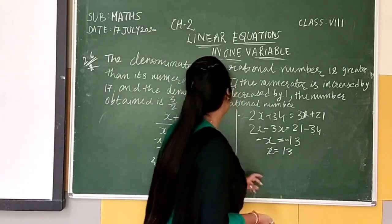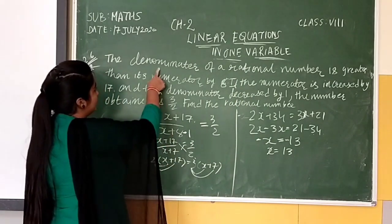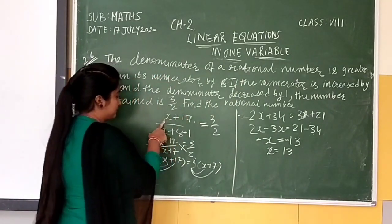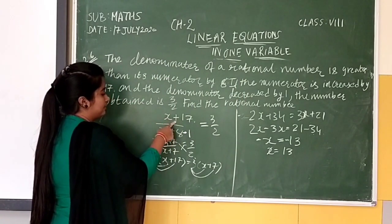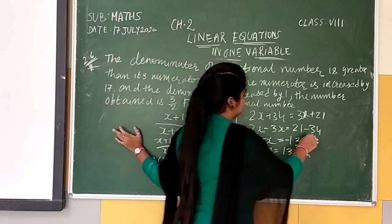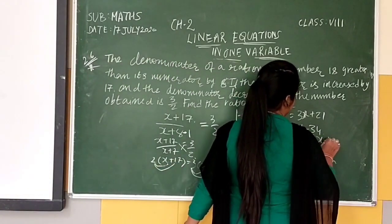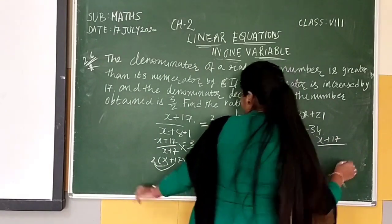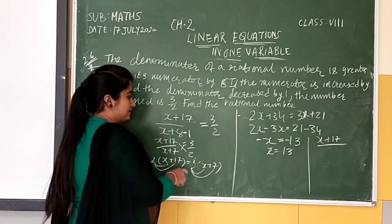So now, we have our rational number: X plus 17 upon X plus 7.